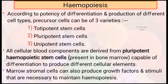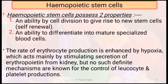Marrow stromal cells can also produce growth factors and stimuli that are necessary to maintain hematopoiesis. Hematopoietic stem cells possess two properties: first, an ability by cell division to give rise to new stem cells, which is called self-renewal; and second, an ability to differentiate into mature specialized blood cells. The rate of erythrocyte production is enhanced by hypoxia, which acts mainly by stimulating the secretion of erythropoietin from the kidney. No such definite mechanisms are known for the control of leukocytes and platelets.